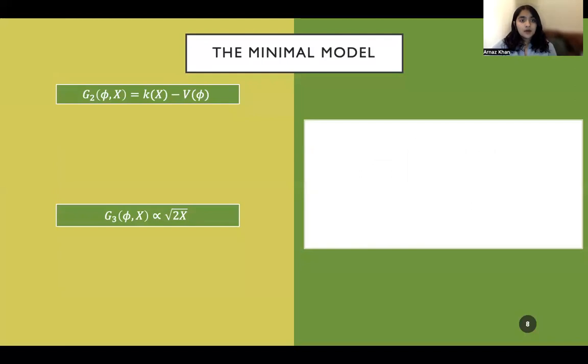Now to our minimal model. So our g2 term here is made up of a kinetic term that is non-canonical. We've also got a linear potential. With g3, it's proportional to square root of 2x, which is simply phi dot, or like the time derivative of phi. Now let's see how it alters our equations of motion in a simple way.